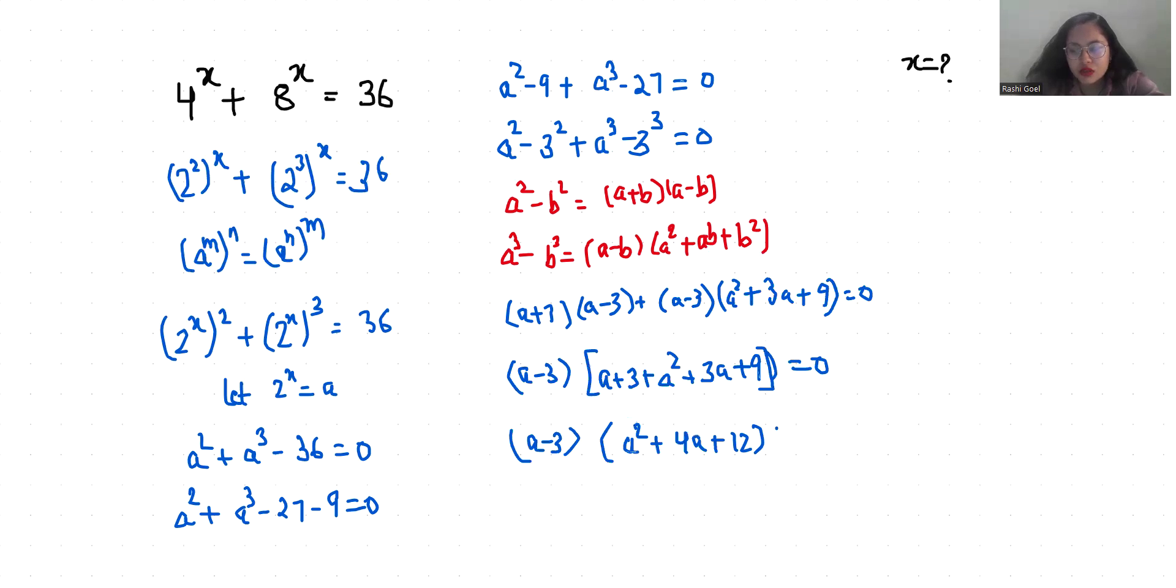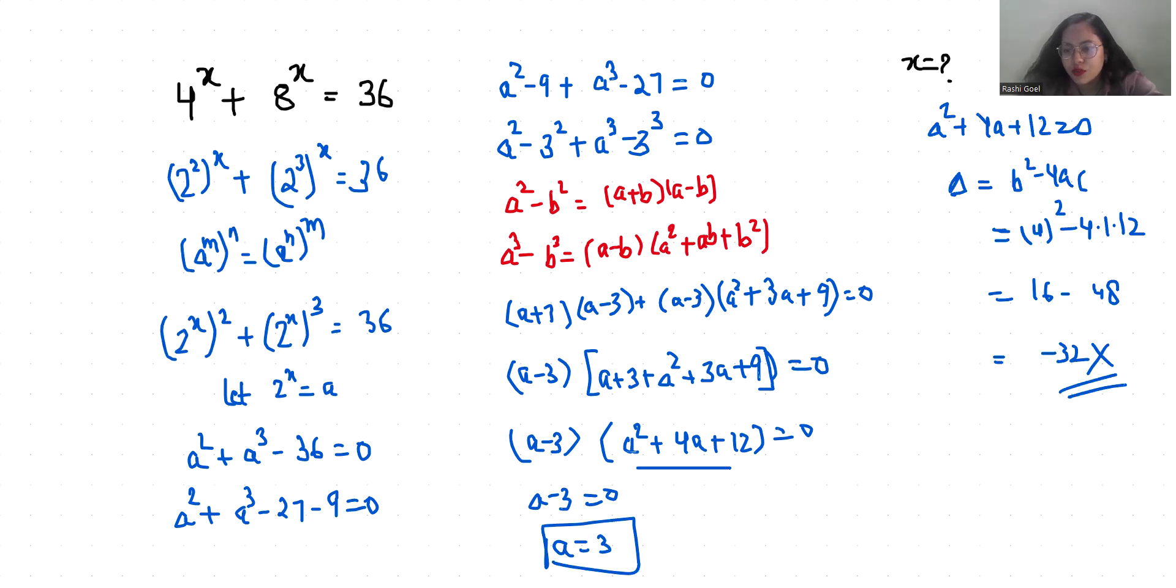So a minus 3 equals 0, so a is 3. Now this quadratic equation, first we check if their roots exist or not. So discriminant equals b square minus 4ac: 4 square minus 4 times 1 times 12, so 16 minus 48, that is minus 32. So no real roots exist.